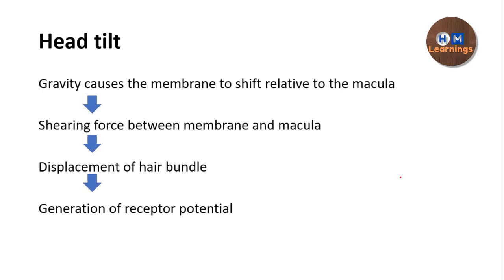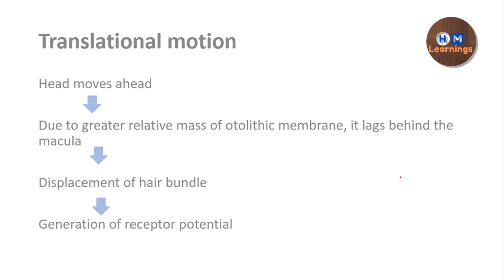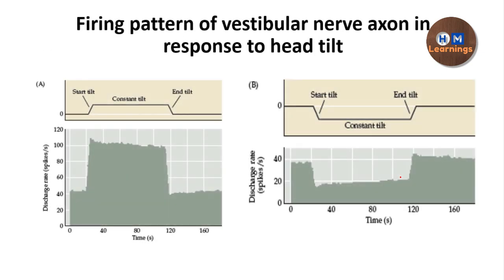To summarize: for head tilt, gravity causes the otolithic membrane to shift relative to the macula in the direction of the tilt, generating a shear force between the membrane and the macula, causing hair bundle displacement and receptor potential generation. For translational motion, the greater relative mass of the otolithic membrane causes it to lag behind the macula, again causing hair bundle displacement and receptor potential generation.